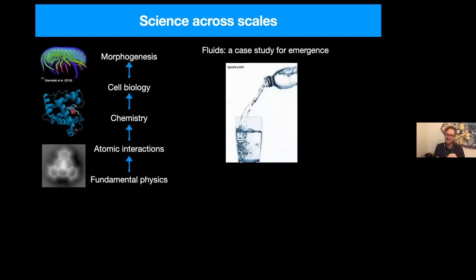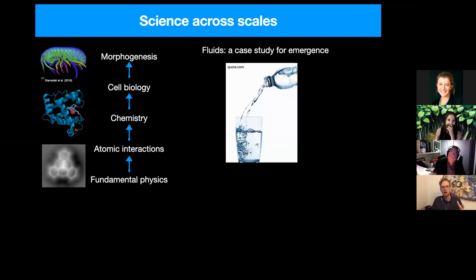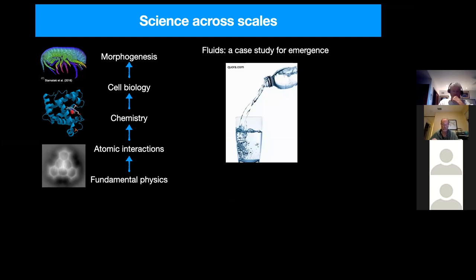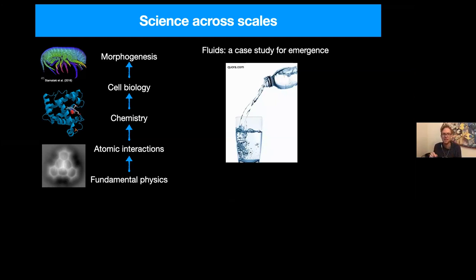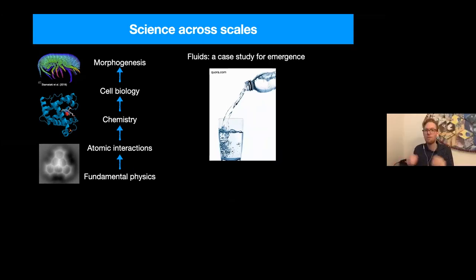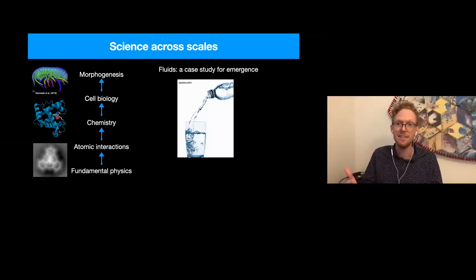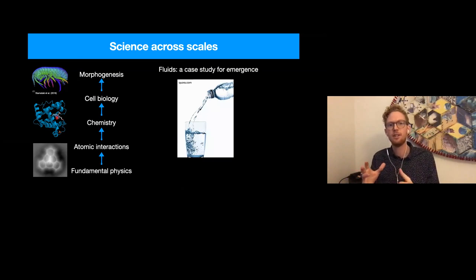So let's consider a concrete example before diving into morphogenesis specifically. A glass of water is composed of many, many molecules, but it would be wrong to say that the laws of fluid dynamics can be simply read off from those of atomic physics. So, for instance, to compute the behavior of water flowing out from a cup, like in this picture, from fundamental interactions of quantum mechanical constituents could take an incredibly long time, perhaps longer than the age of the universe to simulate on a computer. And more importantly, it would completely miss the emergent simplicity of fluid behavior. There are far fewer equations that are needed to capture the flow of a fluid than to capture all of the microscopic interactions of the constituents.